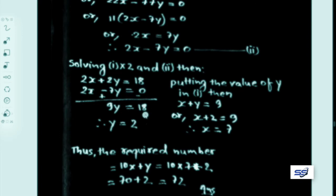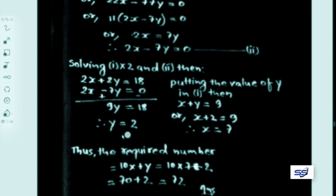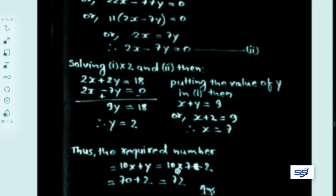Putting y equals 2 in equation 1: x plus 2 equals 9, therefore x equals 7. So the digits are x equals 7 and y equals 2, and the required two-digit number is 72.